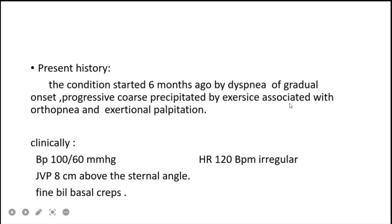Clinically, the patient's blood pressure was 100/60 mmHg. The heart rate is 120 beats per minute, which is irregular. The jugular venous pressure is 8 cm above the sternal angle, and the patient has fine bilateral basal crepitations.